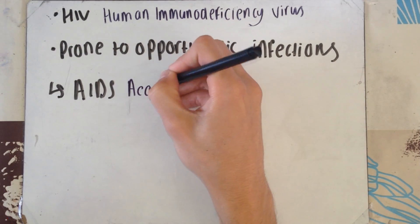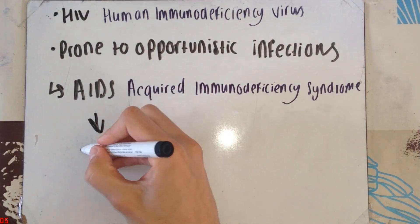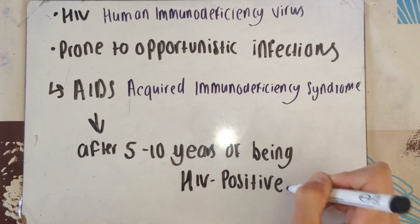After 5 to 10 years of living with HIV and being HIV positive, you have the chance of developing AIDS. Acquired immunodeficiency syndrome.